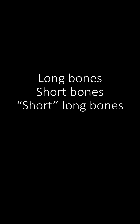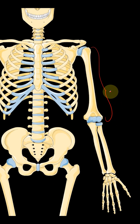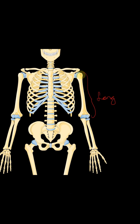What is the difference between long bones, short bones, and short long bones? To understand this, let us bring a skeleton. This bone, the humerus, is an example of a long bone. A long bone will have two ends — an upper end and a lower end — and a shaft. That makes the radius and ulna also long bones, because they also have an upper end, a lower end, and a shaft.